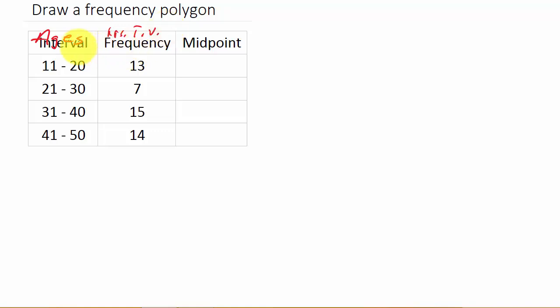Alright, so what we have to do to do a frequency polygon is, here we have ages 11 to 20, people from ages 11 to 20 watch TV about 13 hours a week, ages 21 to 30, 7 hours a week and so on. Well, we need to get the midpoint of each interval.